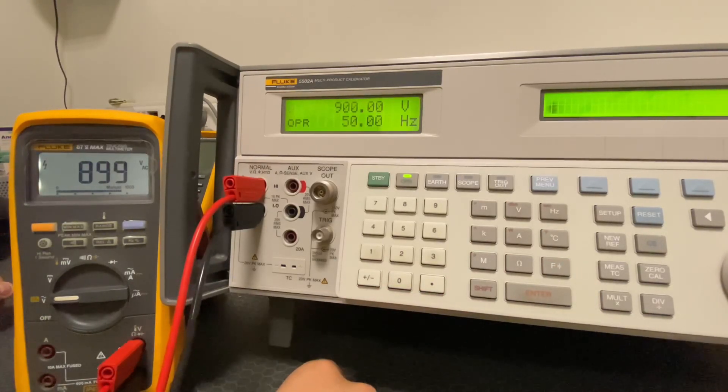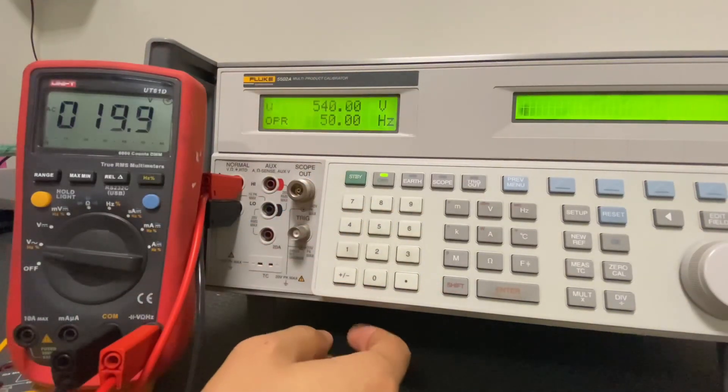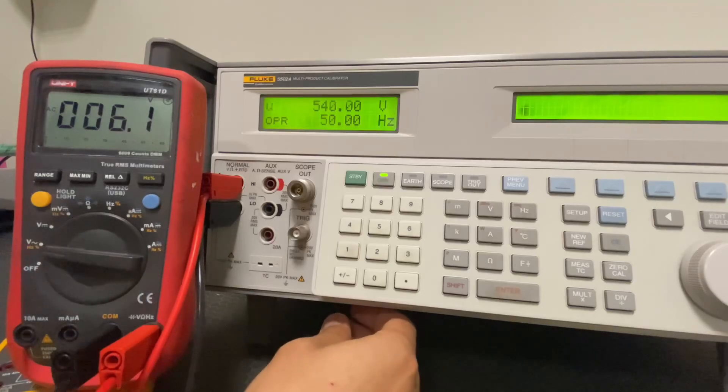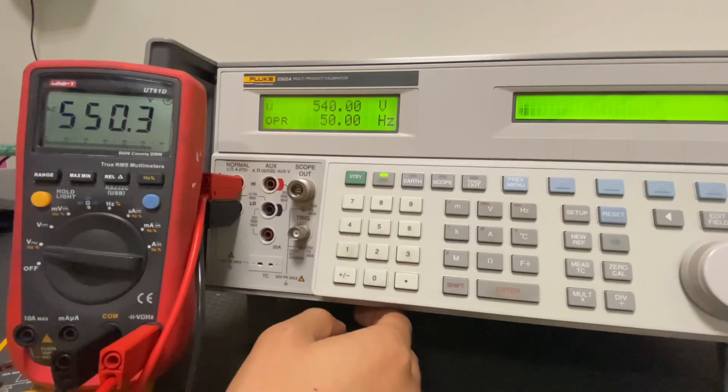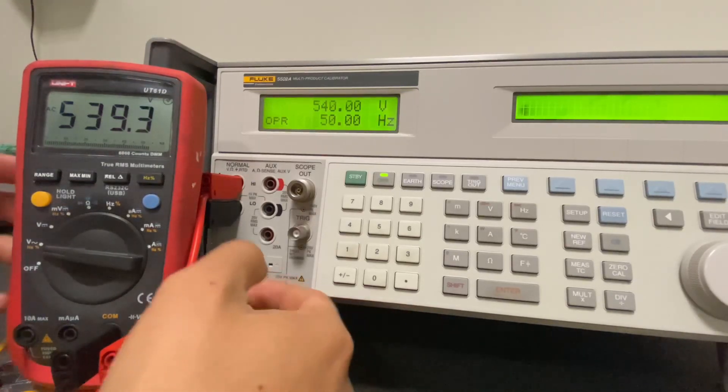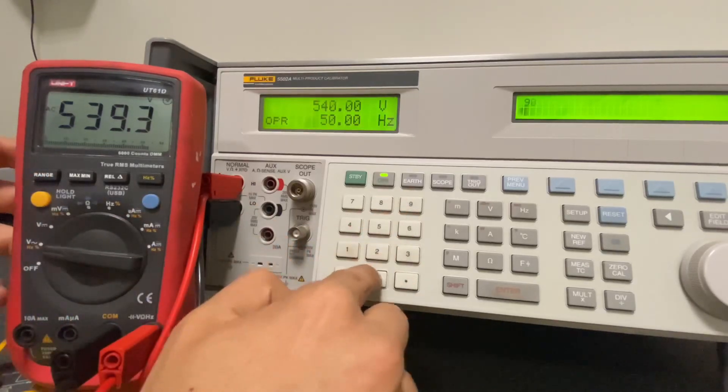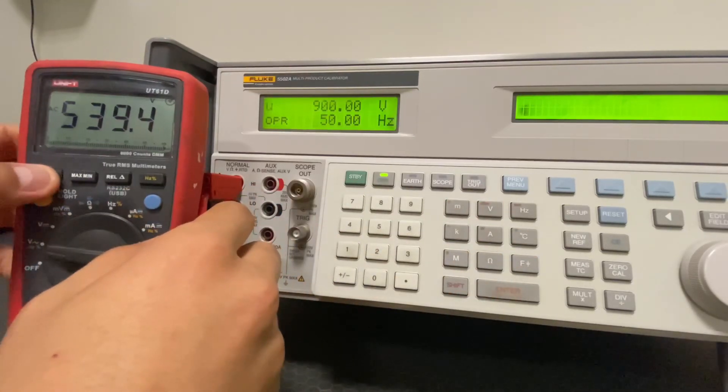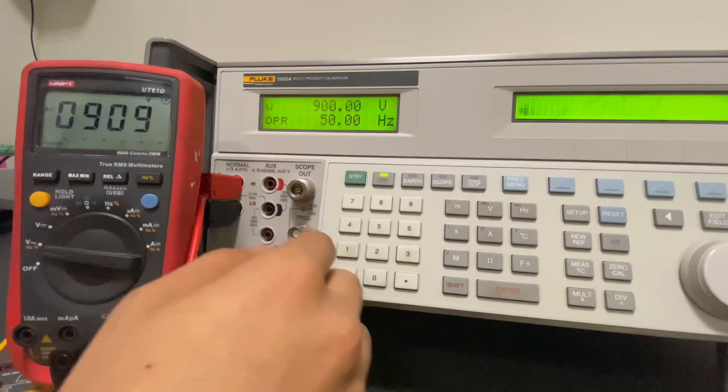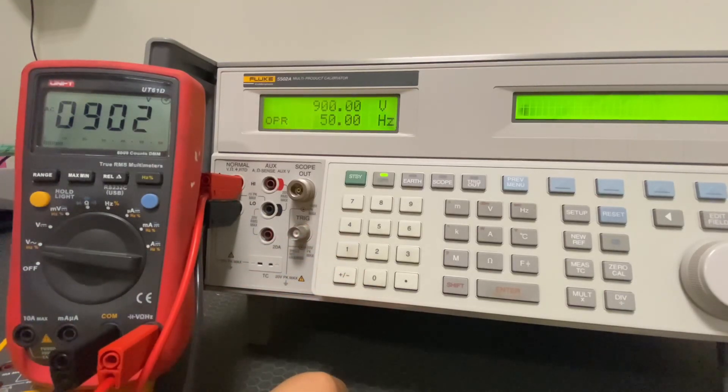At 900 volts AC, a 1 volt deviation occurred on the Fluke while on the Unit a 2 volt deviation was observed. I think the Unit might blow up. We have also completed the AC voltage calibration.